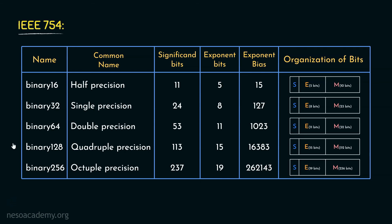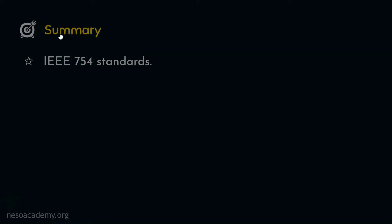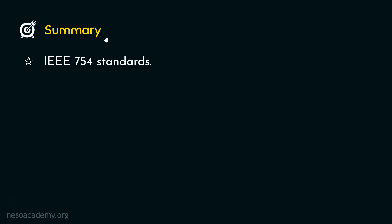These are the floating point standards specified by IEEE 754. In this session, we learnt about the different IEEE 754 standards. In the next session, we will learn a little bit more about IEEE single and double precisions. Thank you all for watching.